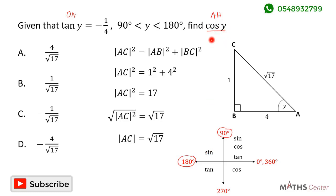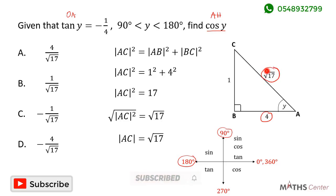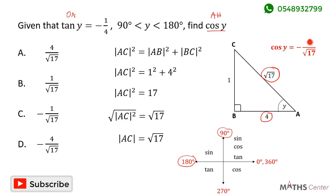From the diagram, cos y equals adjacent divided by hypotenuse, which is 4 divided by square root of 17. But because y falls between 90 and 180 degrees, cos y is negative. So cos y equals negative 4 divided by square root of 17. The correct option is D.